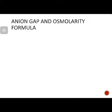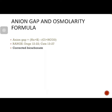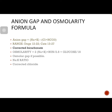The next set of calculations includes anion gap. The formula and reference range for dogs and cats are shown on screen. We should also estimate corrected bicarbonate level, calculated osmolarity using the formula provided, osmolar gap, sodium-potassium ratio, and corrected chloride.